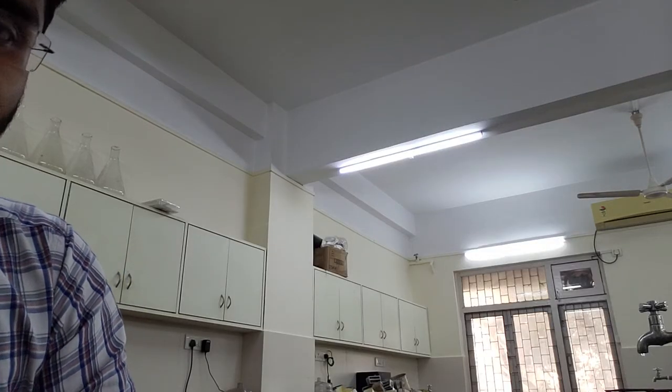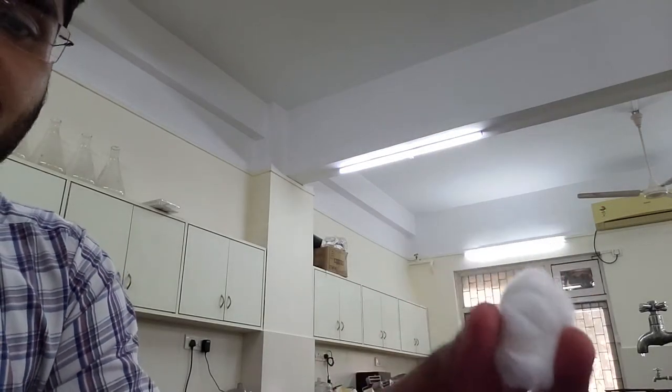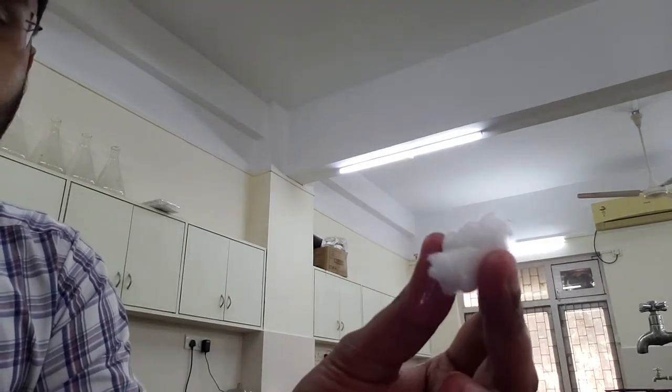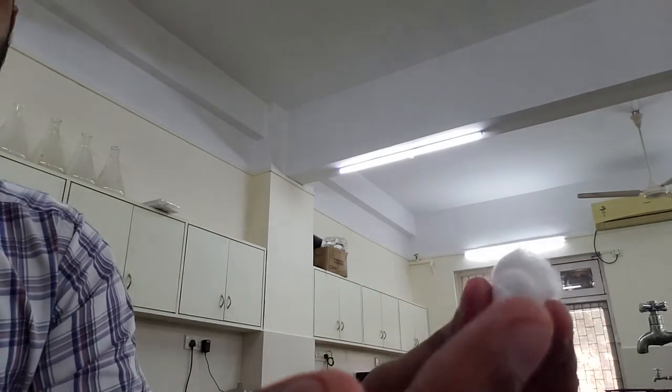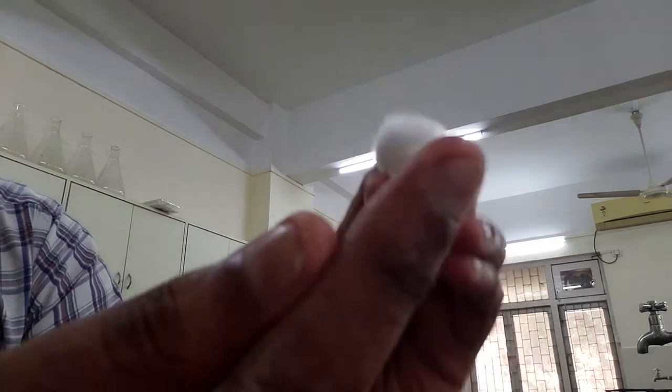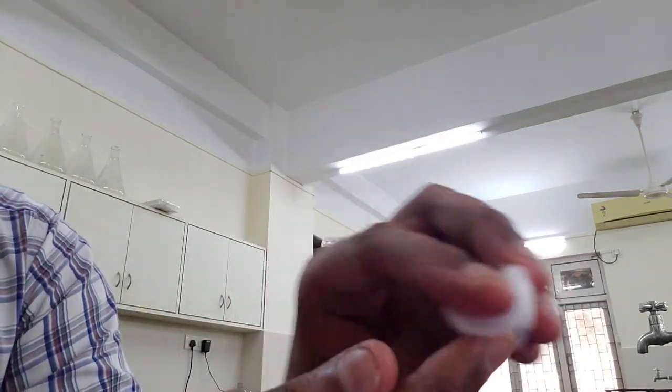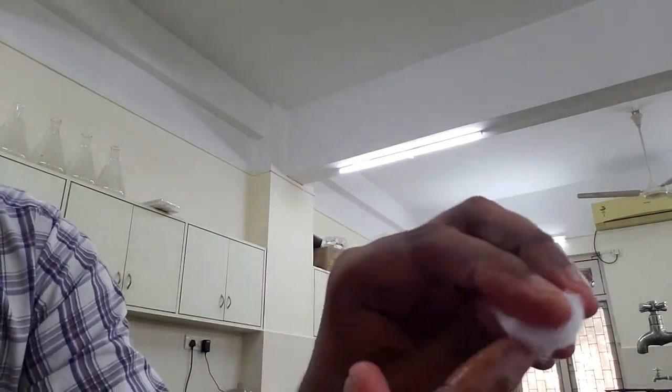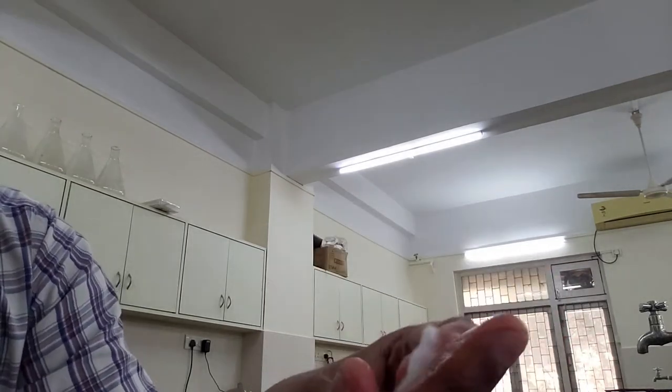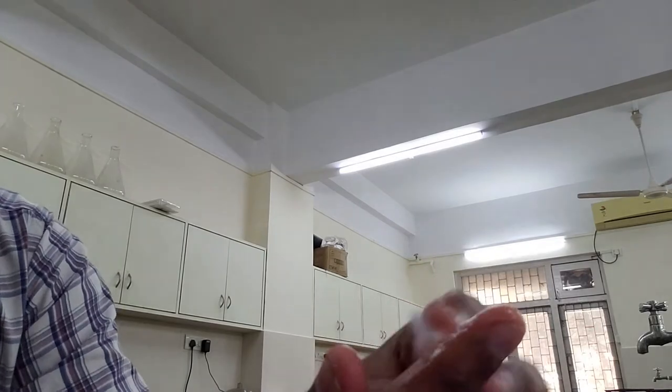First of all, I have taken a clean cotton which has alcohol in it. The finger on which I'm going to prick myself, I will clean that with alcohol properly. This is a kind of surface sterilization and cleaning.